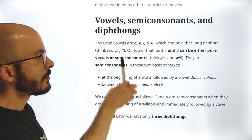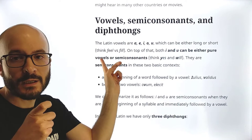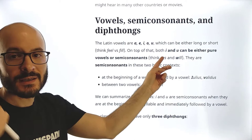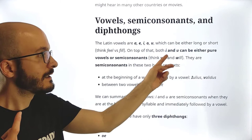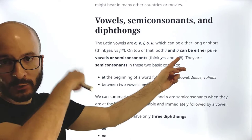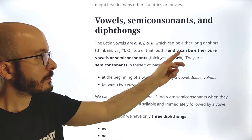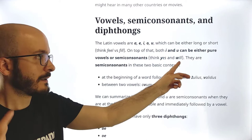On top of that, both I and U can be either pure vowels or semi-consonants. Think about the English word 'yes' — that initial Y sound is what the Latin I sounds like when it works as a semi-consonant. And when U works as a semi-consonant, it sounds like the W in English, which is why U and V are connected.